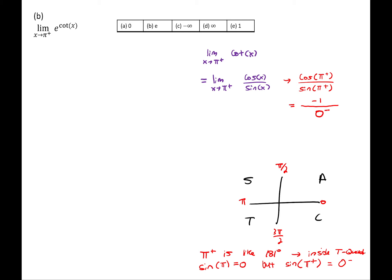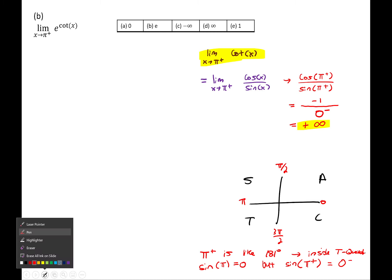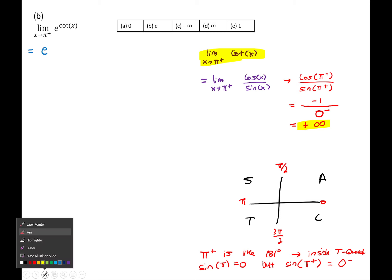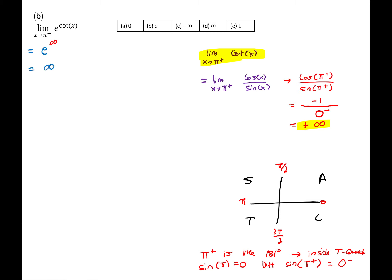A negative over a negative is positive, and 1 divided by a tiny tiny number is infinity. So the limit as x→π⁺ of cot(x) is positive infinity. Therefore our limit equals e to the infinity, which equals infinity. So the answer is option D.